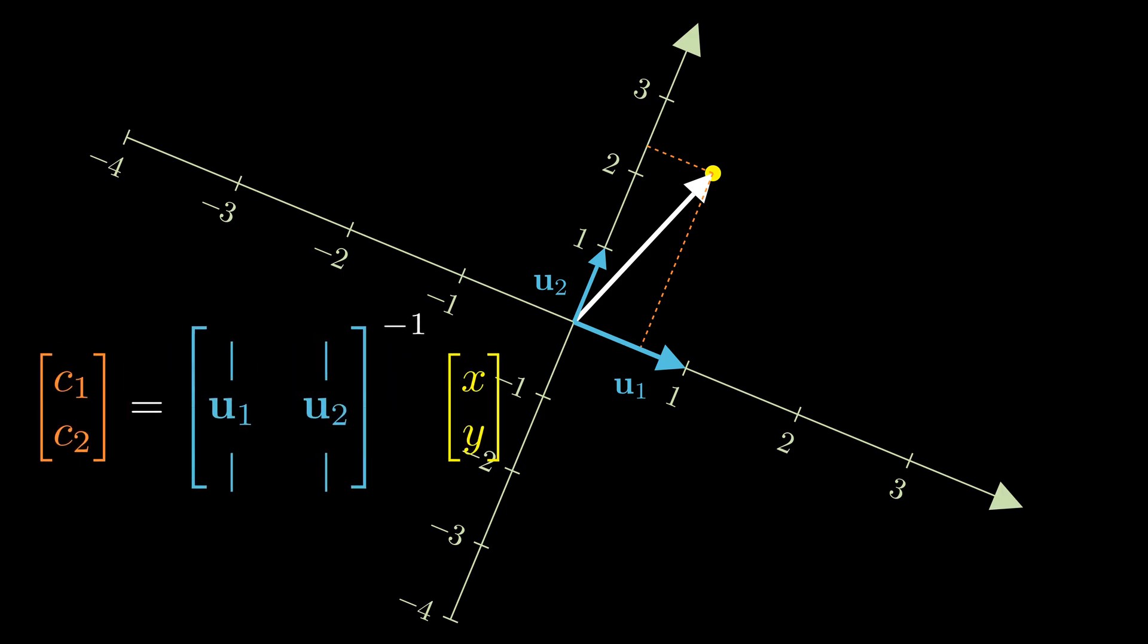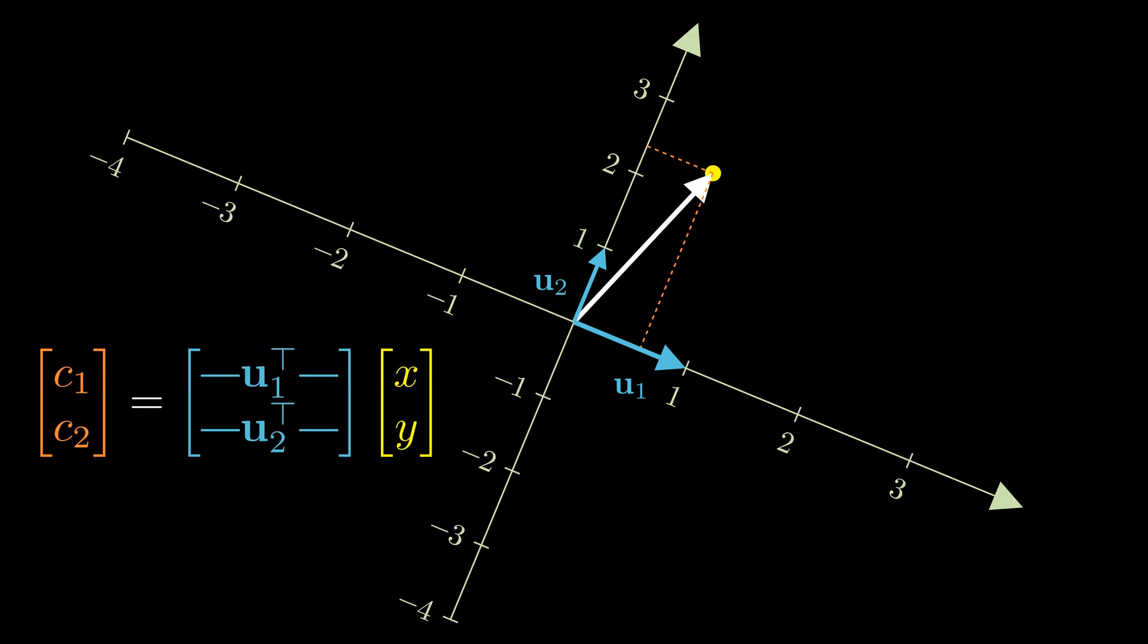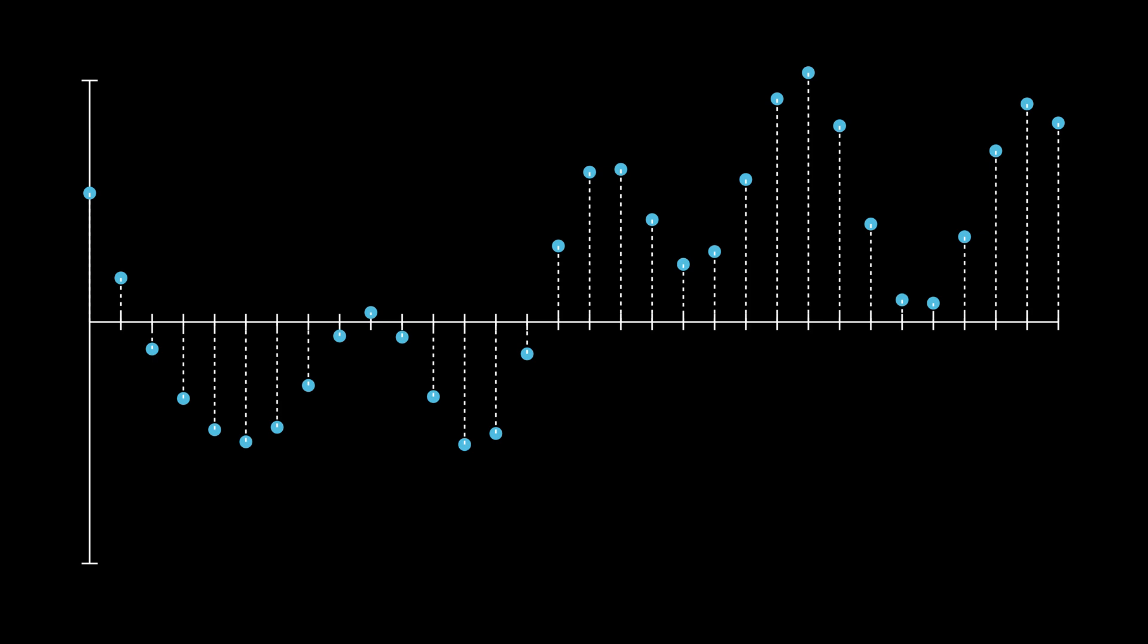To find the coefficients c1 and c2, we just need to compute the inner product between the basis vector and our data point p.